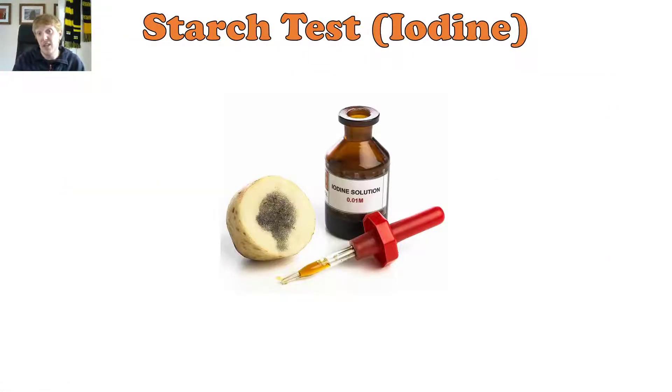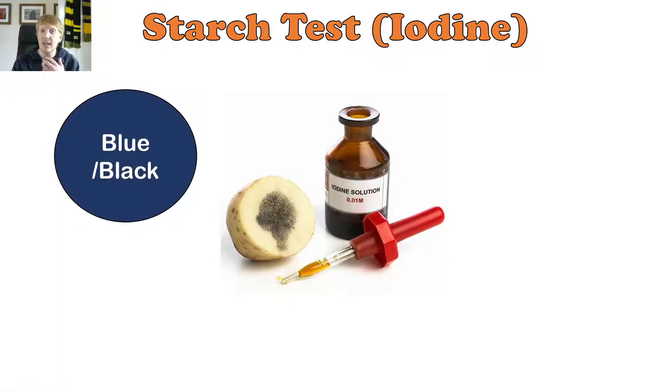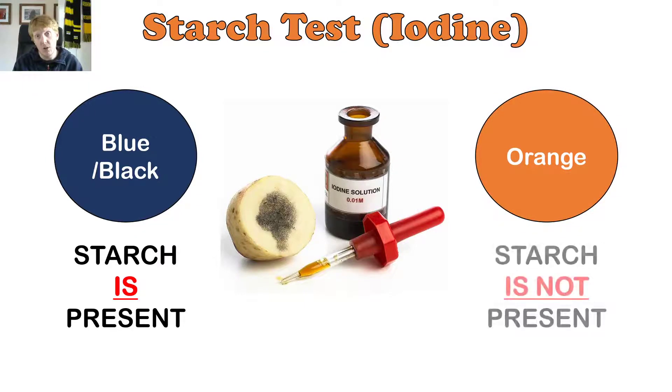Next, to test for starch, we use this solution here, which is our iodine solution. And if starch is present, it will go a blue-black colour, a really dark blue. So if it's blue-black, starch is present. If it stays orange, which is the colour of iodine, it means starch is not present.